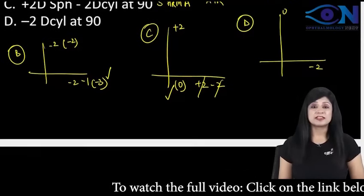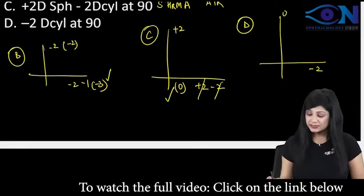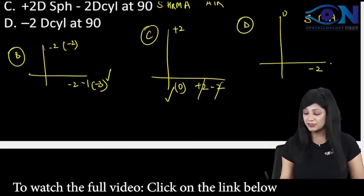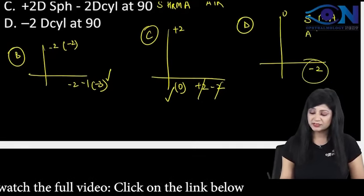So which kind of astigmatism this is? This is actually simple myopic astigmatism and minus 2 is more so this is against the rule.